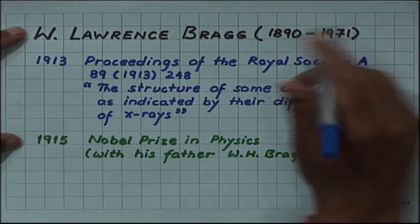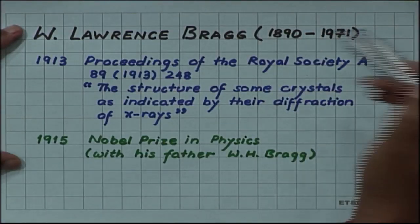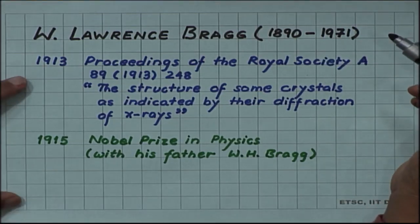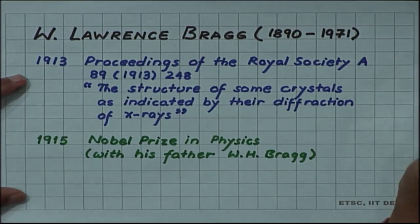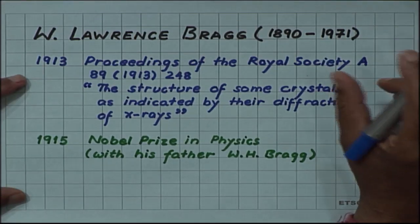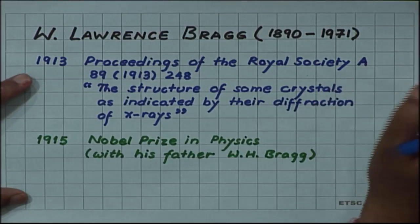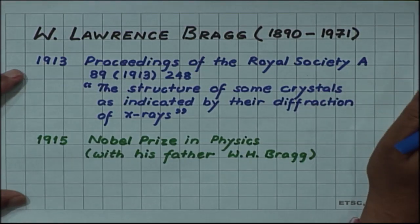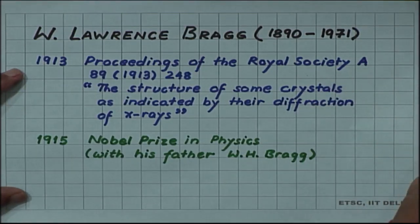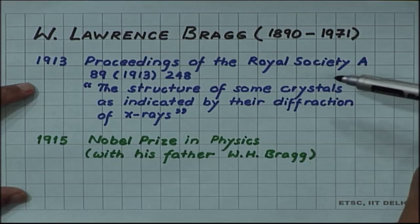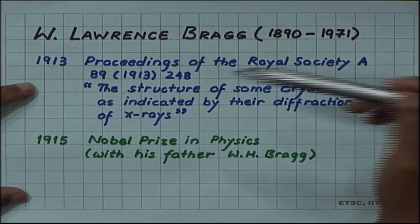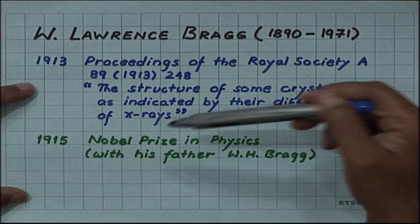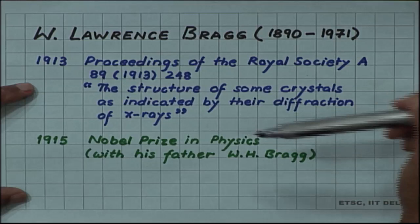William Lawrence Bragg — the son Bragg — in 1913 solved the structure of many crystals including sodium chloride and published his results in Proceedings of the Royal Society: 'The Structure of Some Crystals as Indicated by Their Diffraction of X-rays.'